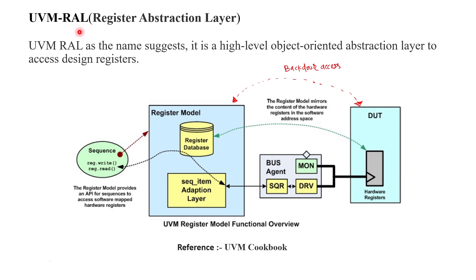This approach is called UVM RAL — Register Abstraction Layer. As the name suggests, it is a high-level object-oriented abstraction layer to access the design registers. With the help of this diagram from the UVM cookbook, we will understand the concept and overview of the Register Abstraction Layer. The RAL consists of three things: register model, register database, and adapter layer.